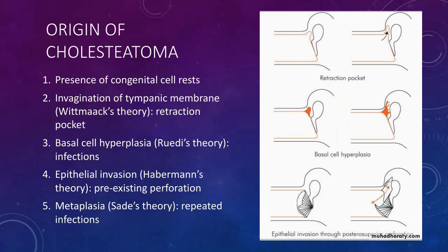Origin of cholesteatoma. There are various theories for the origin of cholesteatoma. The first one is the presence of congenital cell rests. According to this theory, there are embryonic epidermal cell rests in the middle ear cleft or the temporal bone which give rise to cholesteatoma.